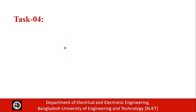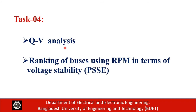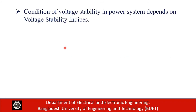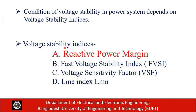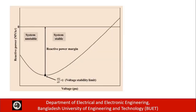Task 4 involves QV analysis and ranking of buses using Reactive Power Margin (RPM) in terms of voltage stability with PSSE software. Voltage stability in a power system typically depends on voltage stability indices; here we work with reactive power margin. This is our QV curve, constructed using the continuation method by increasing reactive power load while keeping the real power load constant. The bottom point of this curve specifies the stability limit or collapse point of the system. The base case operating point is shown, and the difference between that level and the collapse point indicates the reactive power margin.